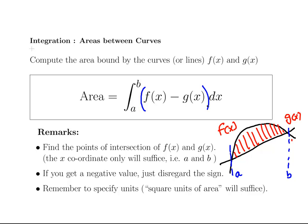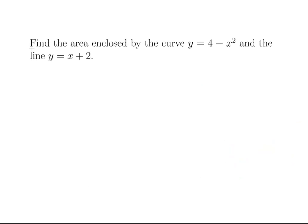Find the points of intersection of f and g. We only need the x-coordinate. If you have a negative value, just disregard the sign. If your definite integral turns into a negative value, just disregard the sign. And remember to specify units, units of area squared at the end. Now, I've done some of these presentations before, so I am going to go to the ones I have not done here. I have six in this slide set altogether.